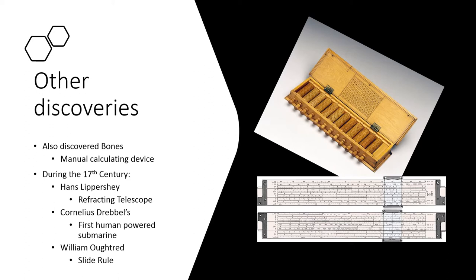Now, another noted discovery by John Napier is his discovery of bones. And this use of bones was a manual calculating device. Now, it's not as well known as his logarithms, because unlike logarithms, we do not use bones today. But if we look at the top right side of this image, we can see an example of John Napier's bones. It looks like a little wooden box.